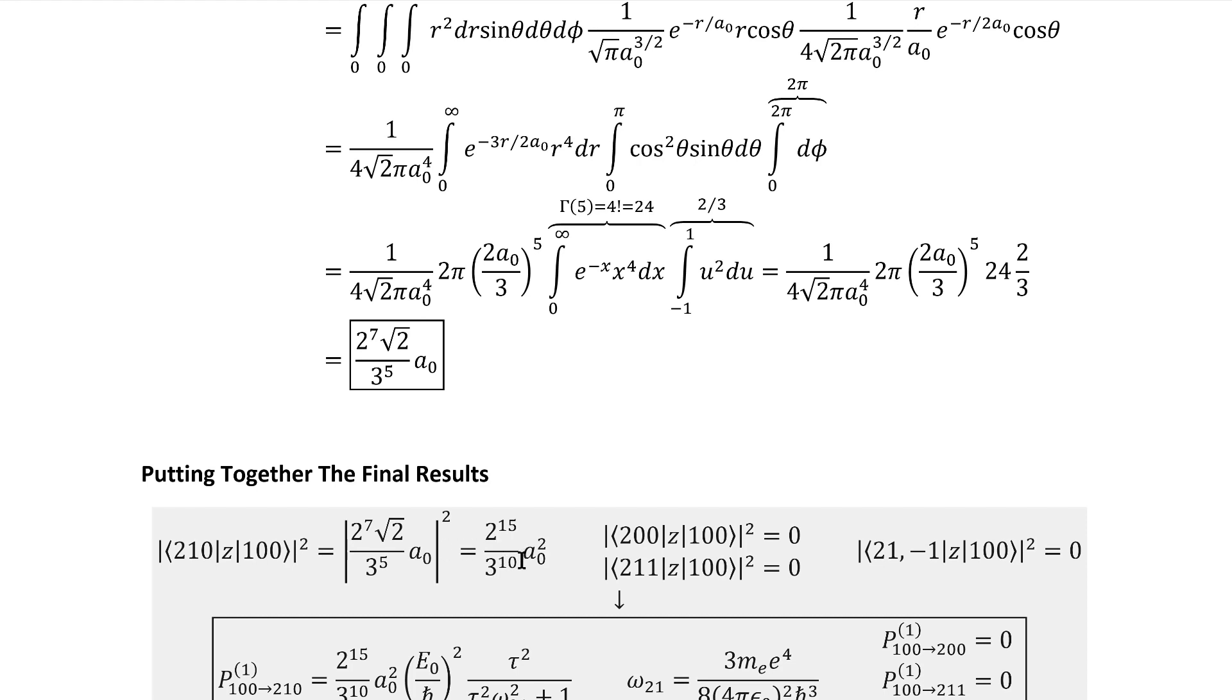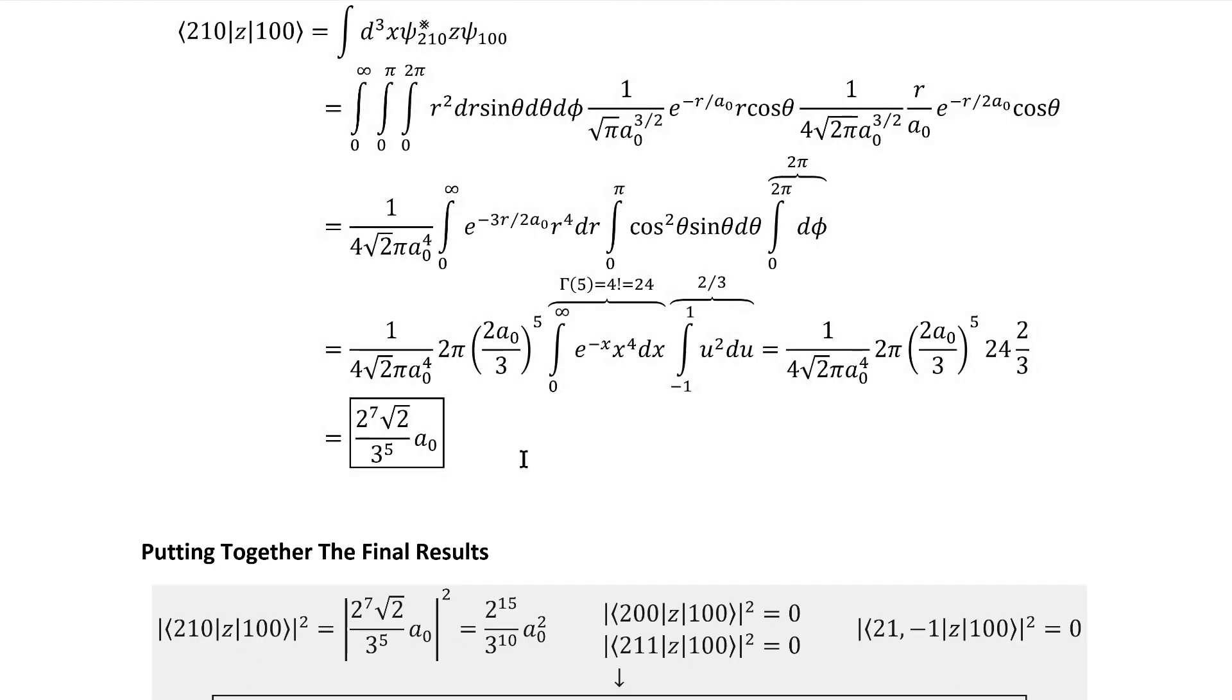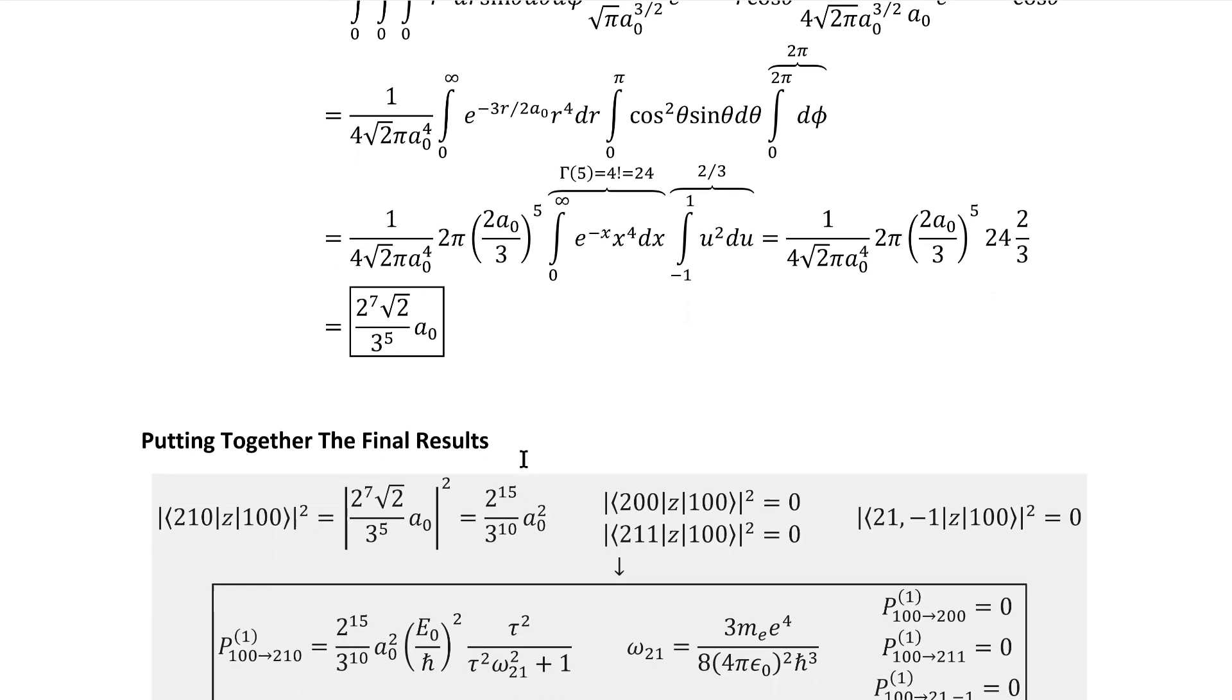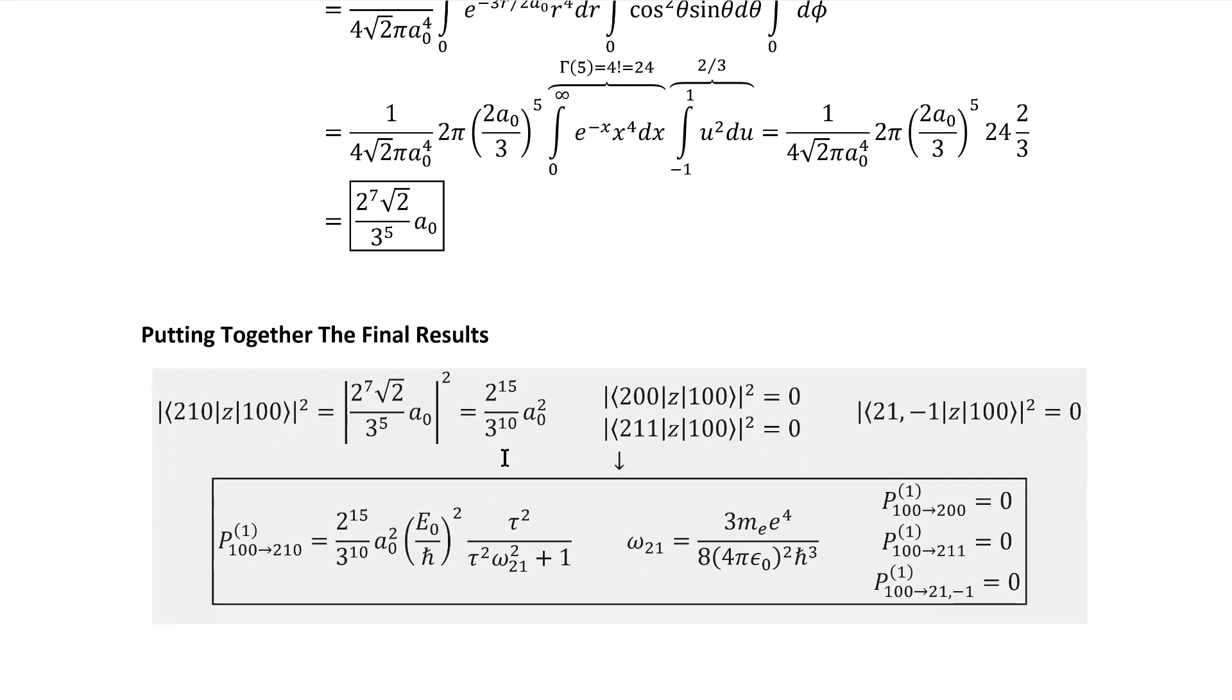Plugging that into the absolute square gets us this strange factor. And with this result and those zero values we got above, and the time integral we already did, and the limit we did after that, we now have everything we need to put our results together. These are the absolute squares that we need, which leaves us with this set of probabilities. We see that, at least among the first excited states, there's only one that we have a chance of transitioning to, to first order and perturbation theory, and that is 210.